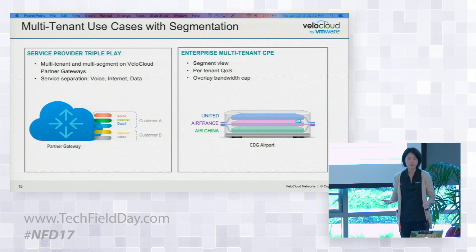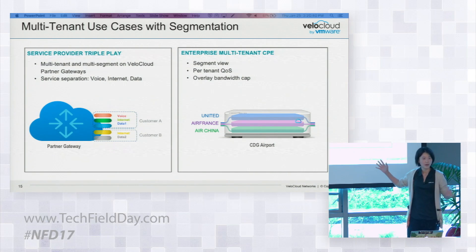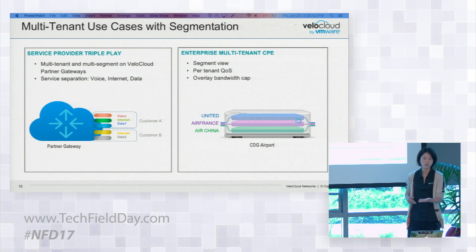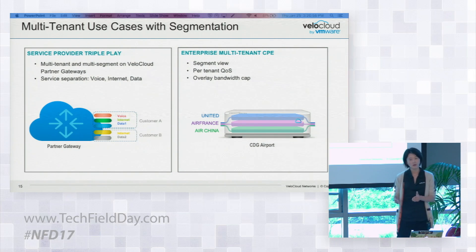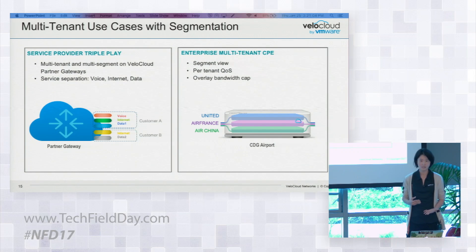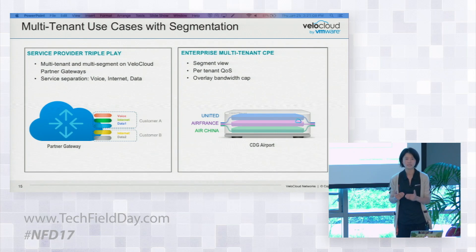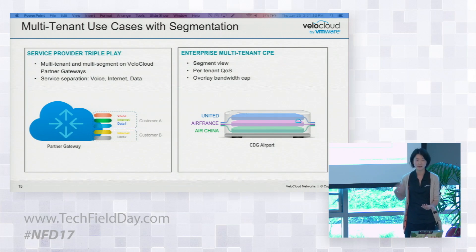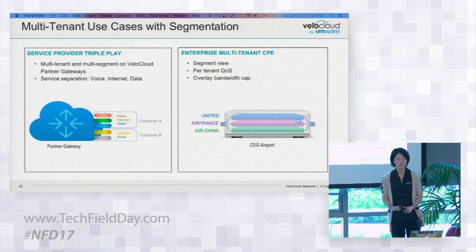For example, you are an airport application provider hosting different applications for different airlines. In each airport, you drop one box and can sub-sell or resell SD-WAN or different services as a bundle to different airlines like United. United's IT team can jump onto the portal to configure their own segmentation within their segment, enable different services, and make policy changes per segment — including per-segment QoS. You can also cap bandwidth per segment, so sub-tenants like United only use the bandwidth they are buying from you.